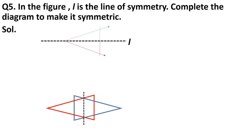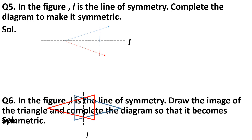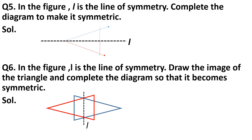Question 6: In the figure, L is the line of symmetry — draw the image of the triangle and complete the diagram to make it symmetric. Similar to Question 5, the blue triangle is given and you must draw the red triangle to make it symmetrical. Hope everything is clear. Thank you.